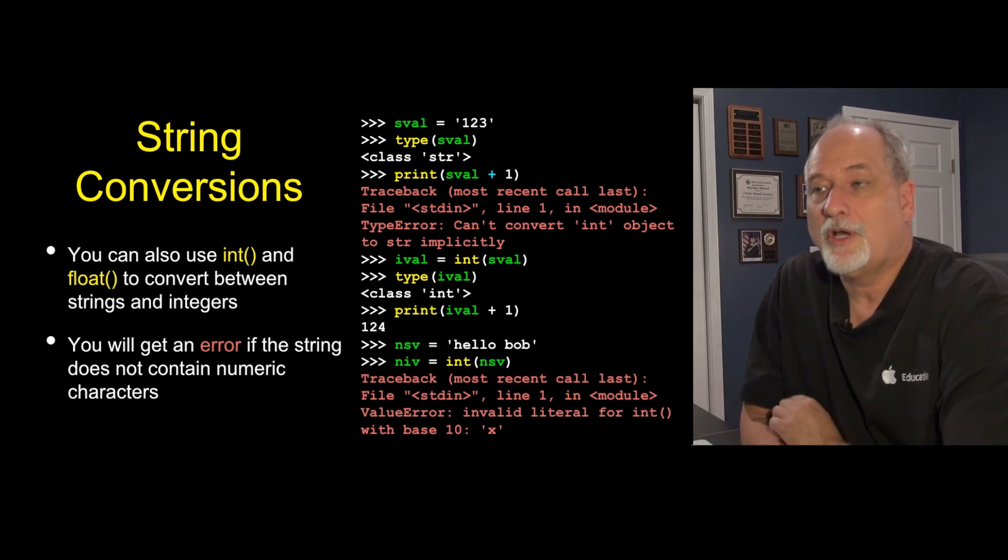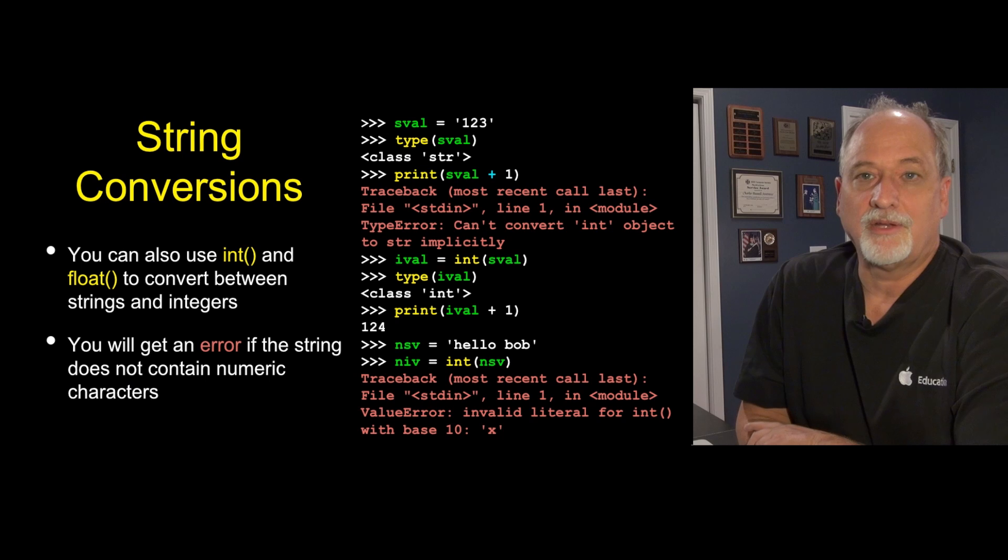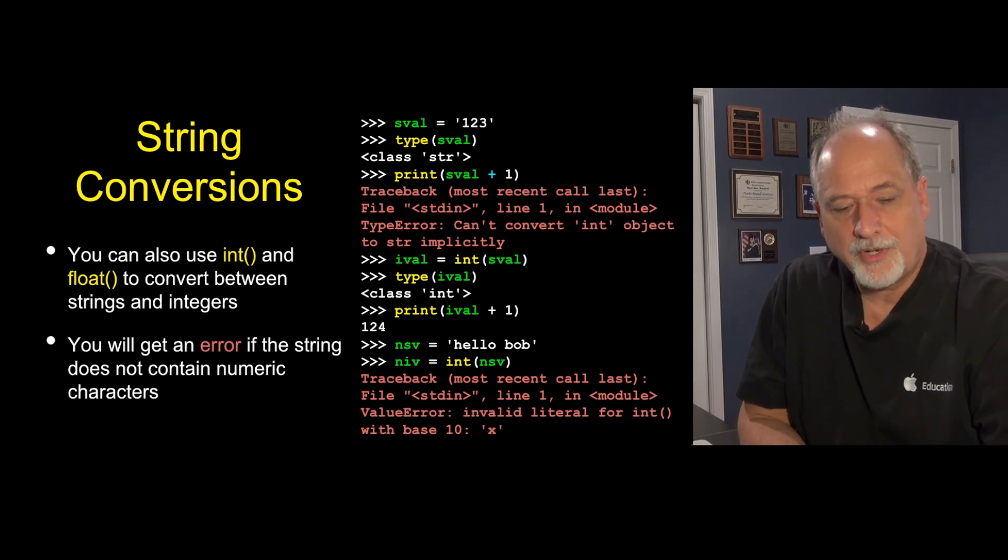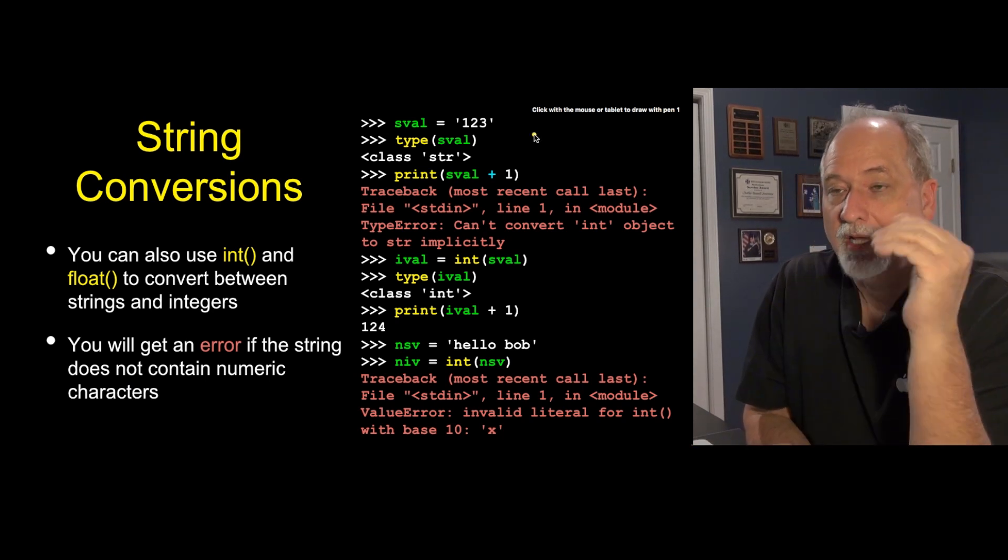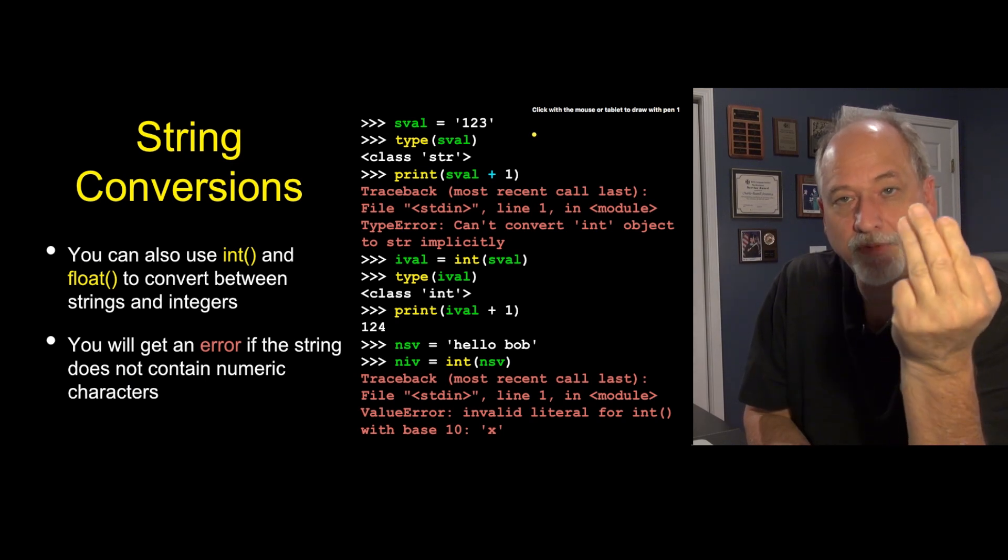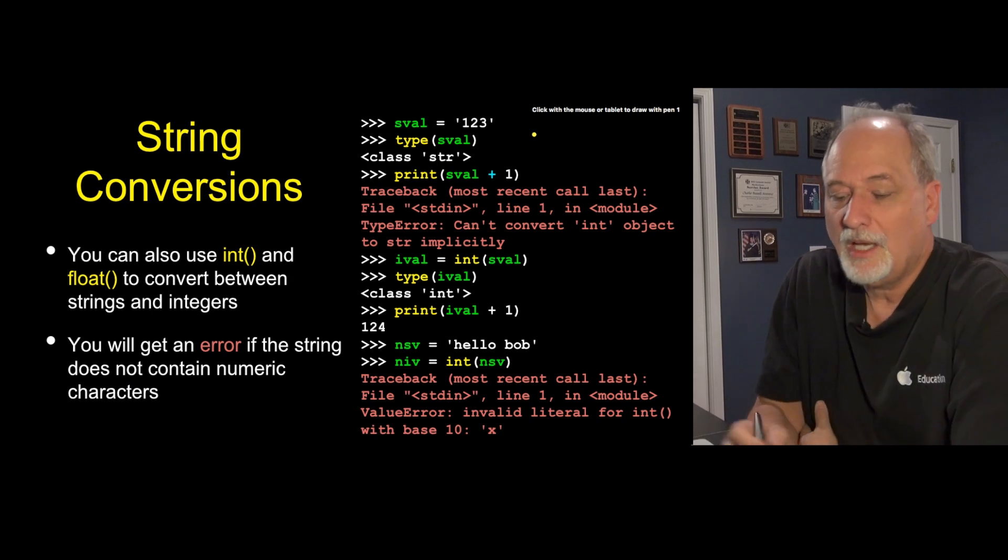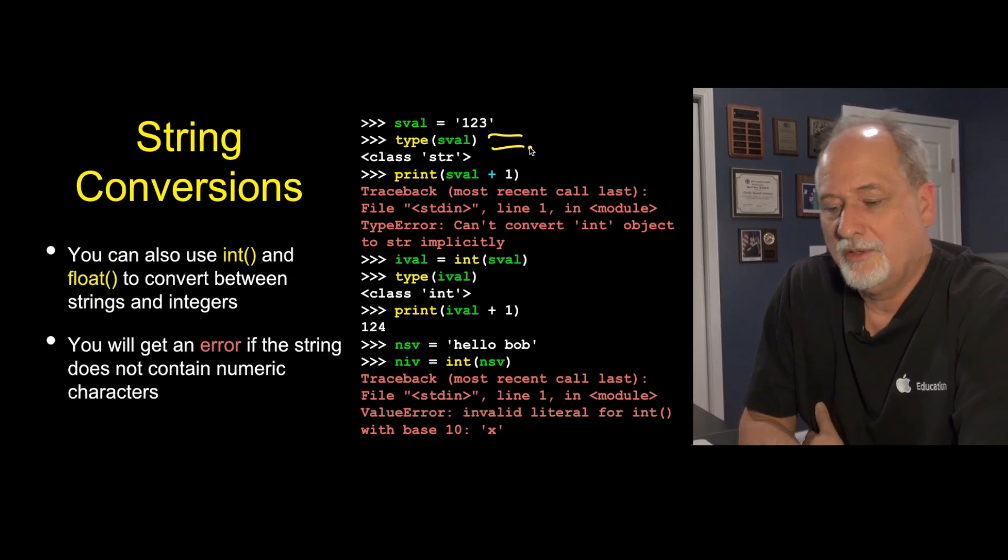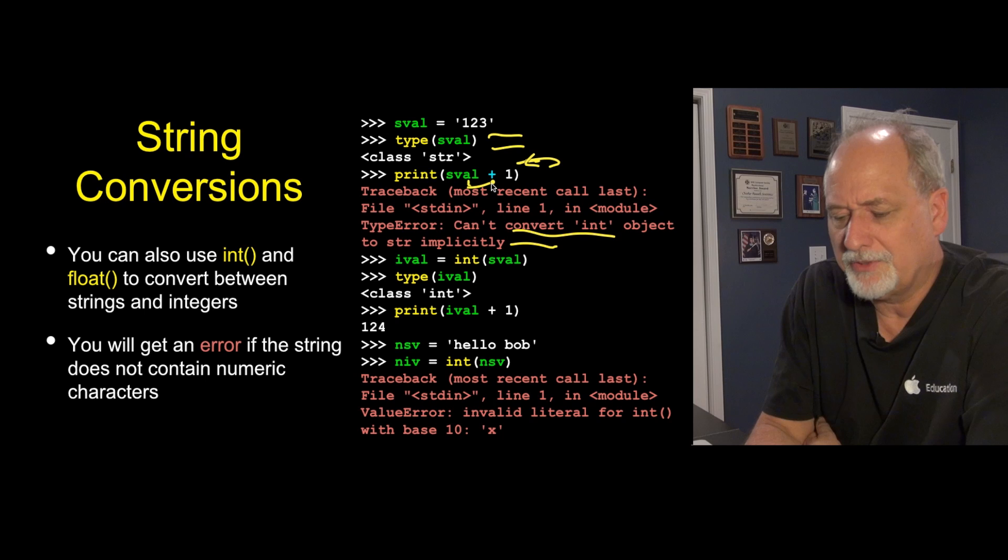We've been talking about converting from integer to floating point, but you can also convert from string to integer or string to floating point. Here we start out with a little string value. It only works for strings that are made of digits. Quote 1, 2, 3, quote is not an integer. It is a three character string that has 1, 2, 3 as the characters in that string, which is very different than 123. We say, what is the type of this? It's a string. We say, let's add 1 to it. And it says can't convert int to string, so that blows up. Because this is a string, it looks to both sides. String plus an integer, not good.